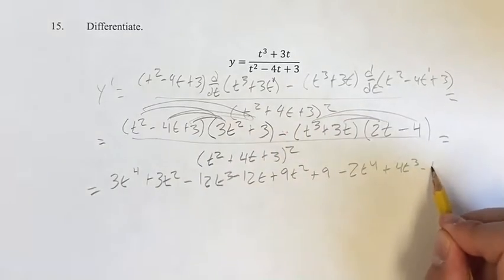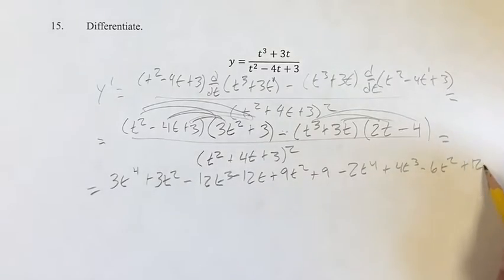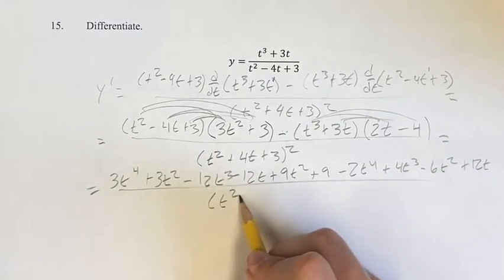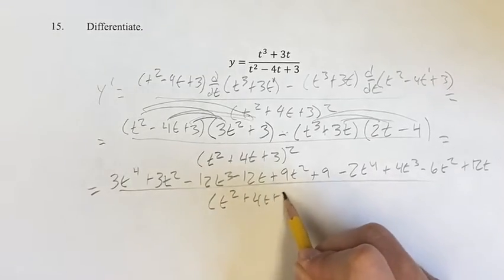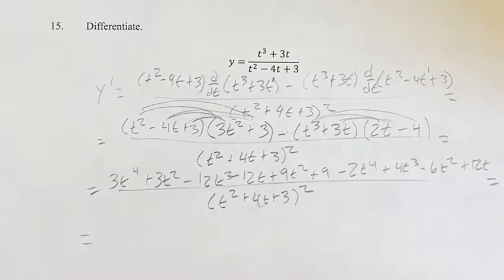Minus 6t squared, plus 12t. Always never forget to distribute the negative. Okay. I'm not going to distribute this out, you can do it if you want, but it doesn't really make it any easier to understand.